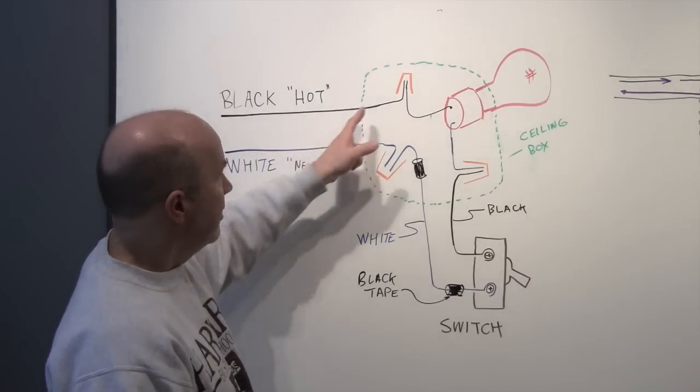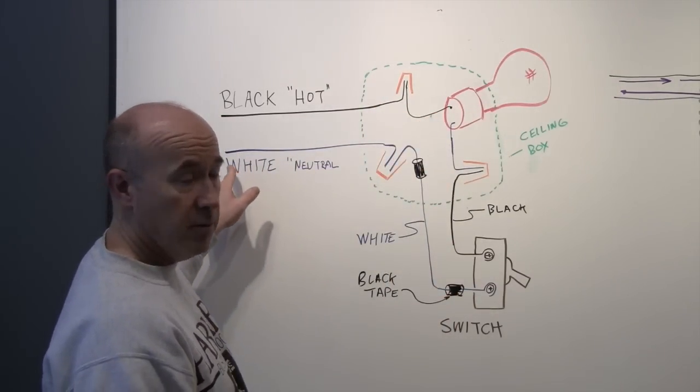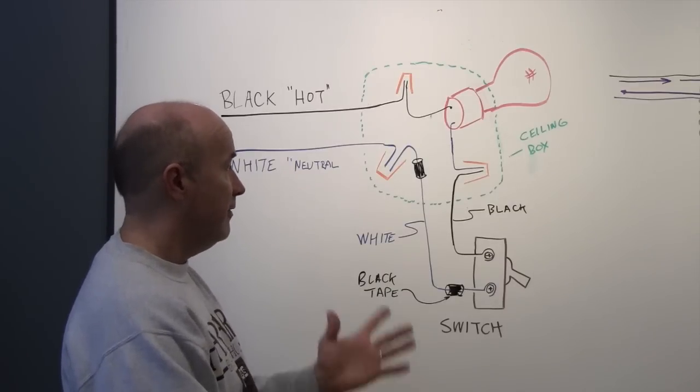So anyway, this will work. Power comes down the black, through the bulb, down through the switch and returns to the white neutral wire. Everything works fine.